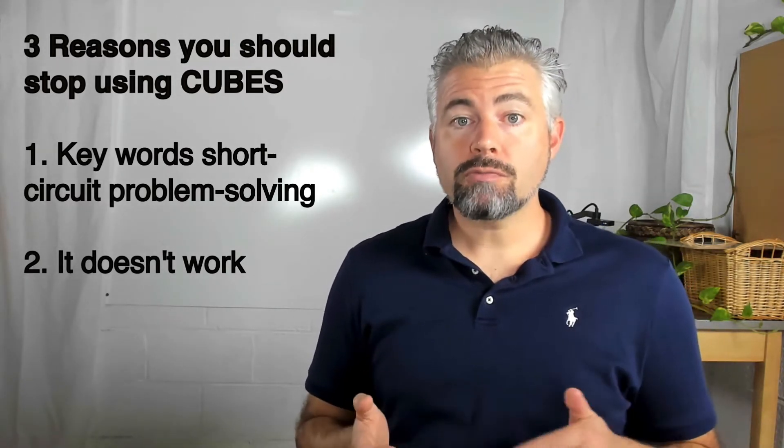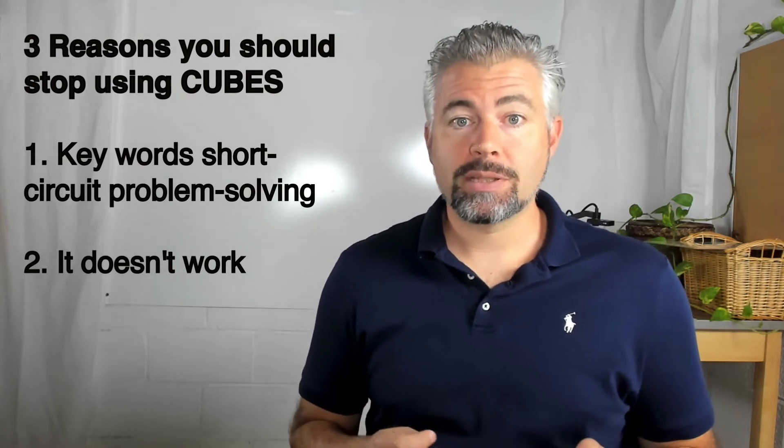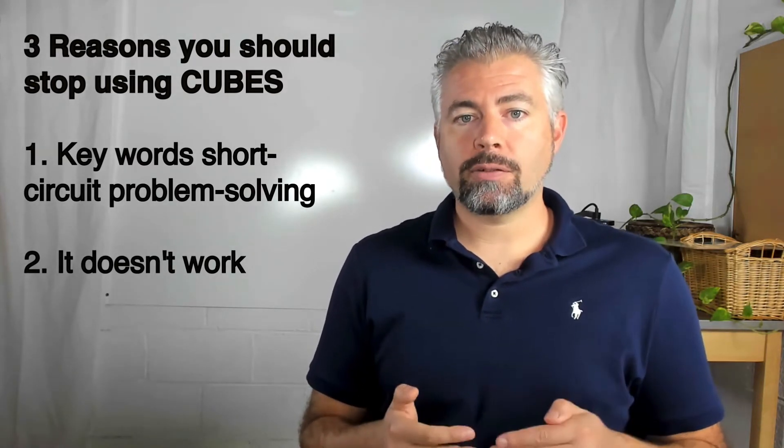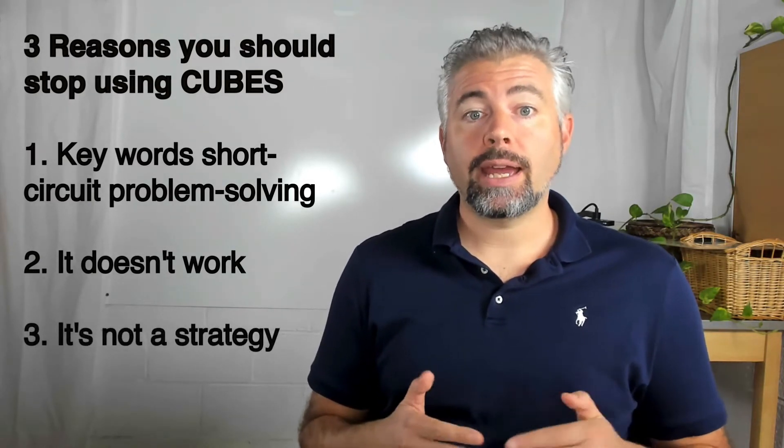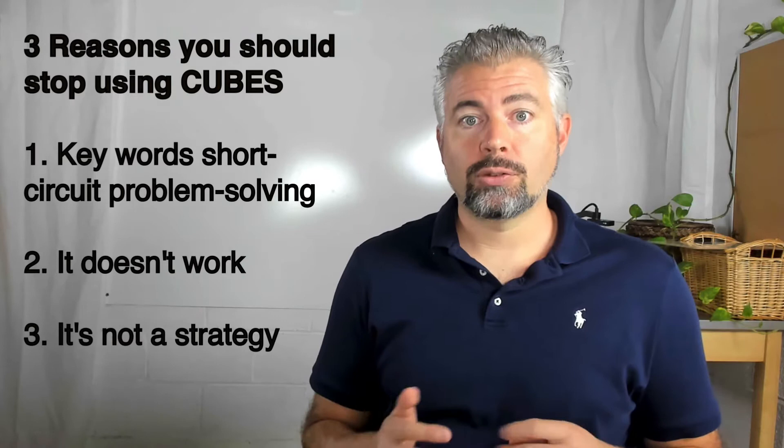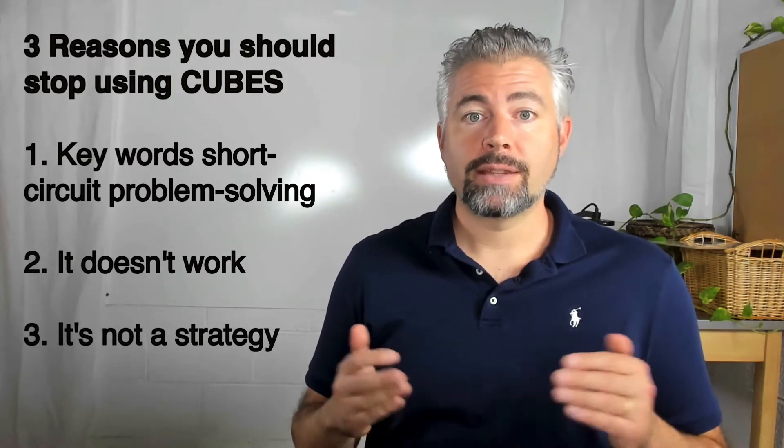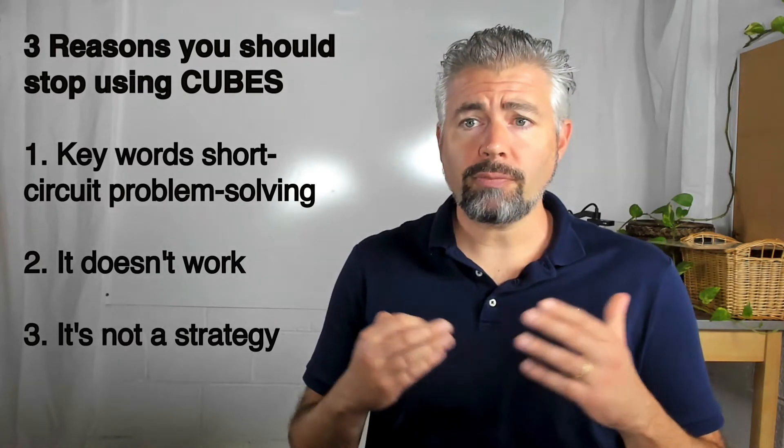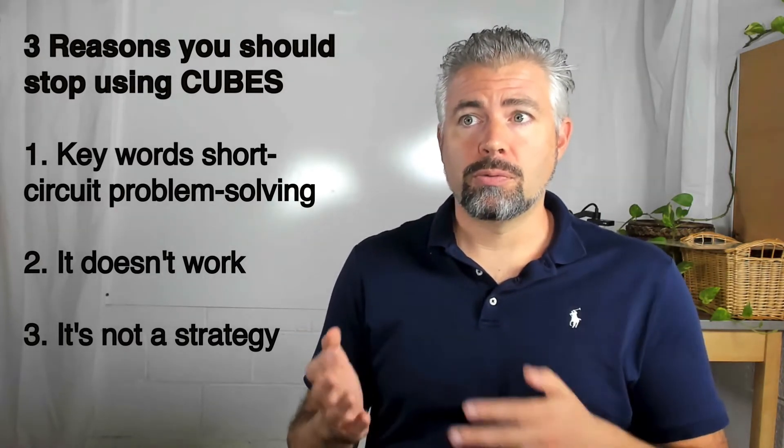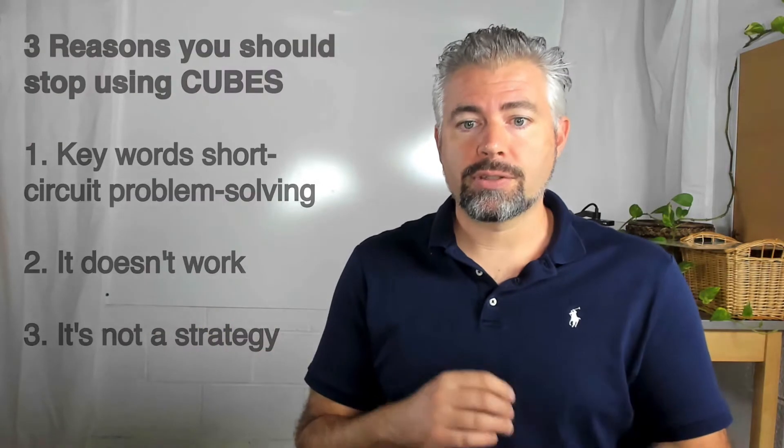Now, the third reason to rethink cubes is that cubes calls itself a strategy, but it's not a strategy. It's actually a process. OK, so a process is a series of steps that we follow to complete a task. So, for example, if I was supposed to mail flyers out, right, the first step I would do would be to fold the paper. The second is put it in the envelope, seal it closed, put a stamp on it and then drop it in the mailbox. That's a process. It's a series of steps. I can repeat them again and again. And I'm actually going to get the task done.